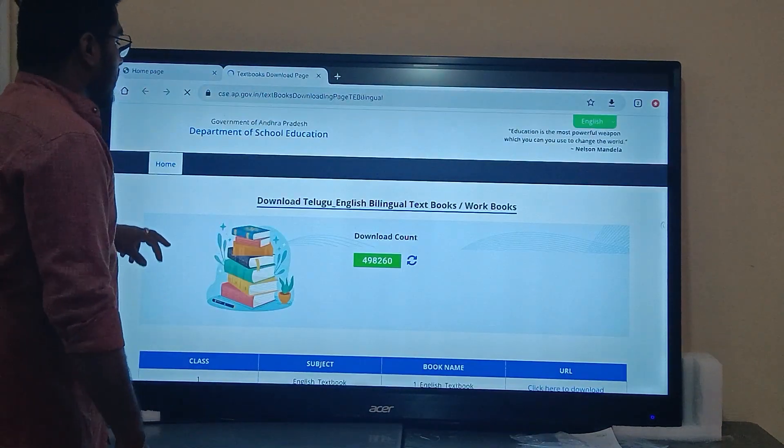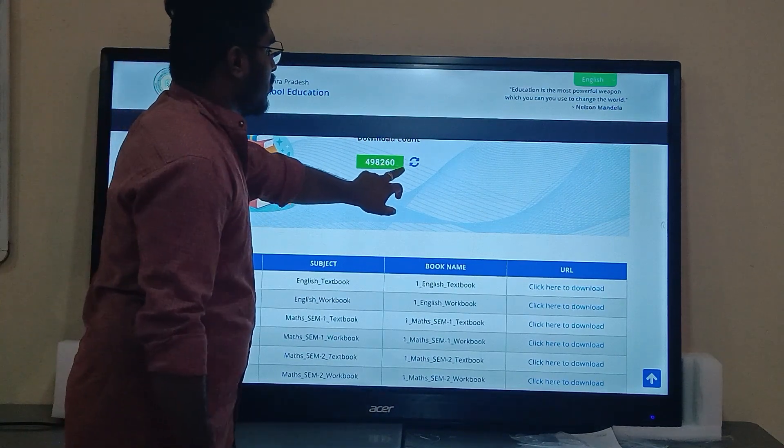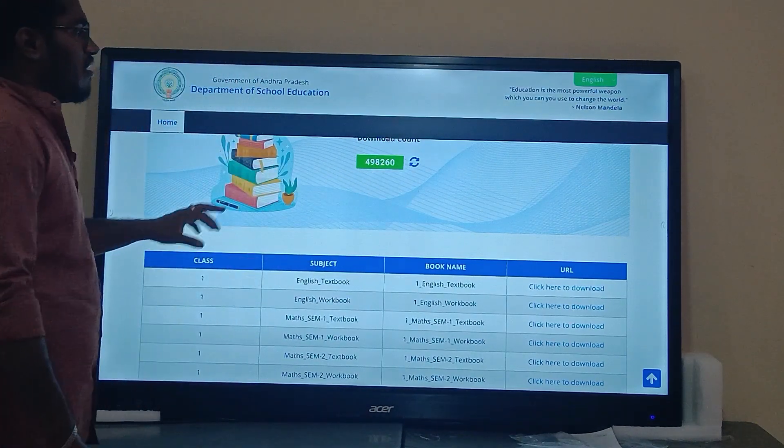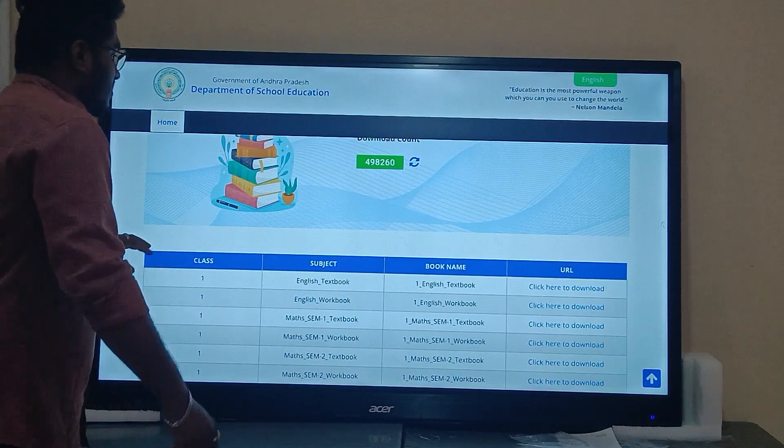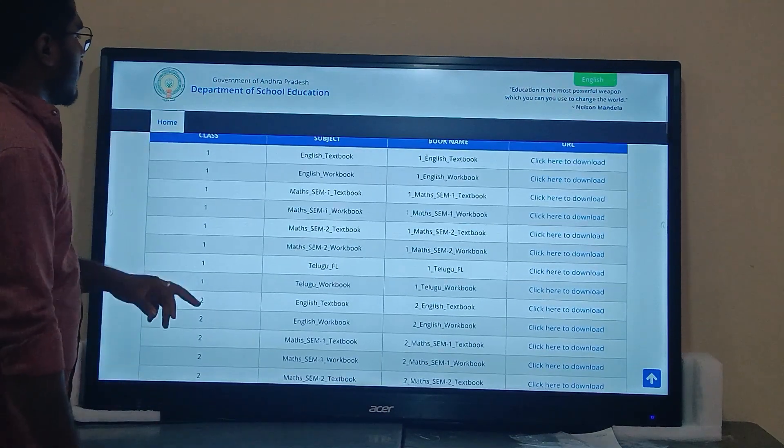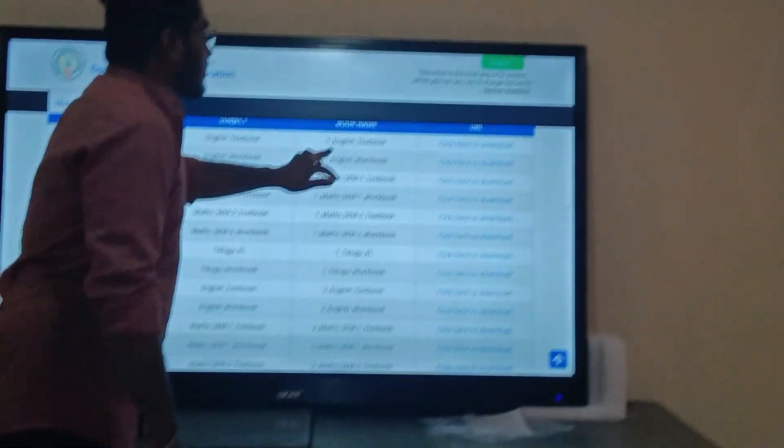You can choose here. The total is 498260. You can download all the textbooks. Here is the first English textbook.